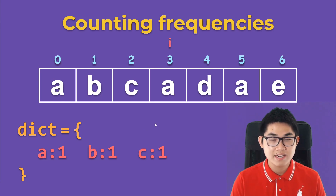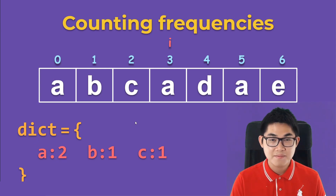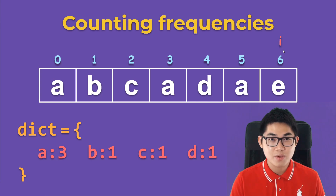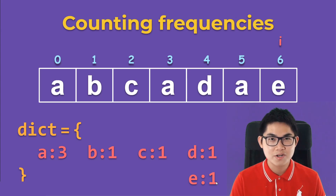We move to the next element and check — yes, 'a' is inside this dictionary, so we increment the value to two, meaning we've counted a total of two letter 'a's so far. We move to the next index and see 'd' — we put 'd' and one into the dictionary. We move to the next letter, 'a' again, so we increment 'a' to three. Finally, we see 'e' — 'e' is not inside the dictionary, so we put 'e' in with one occurrence.